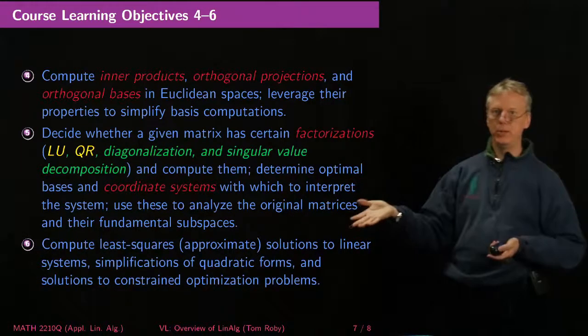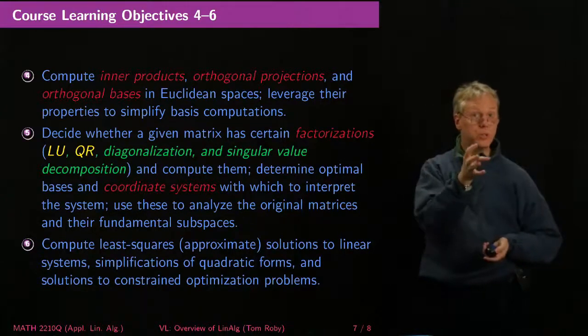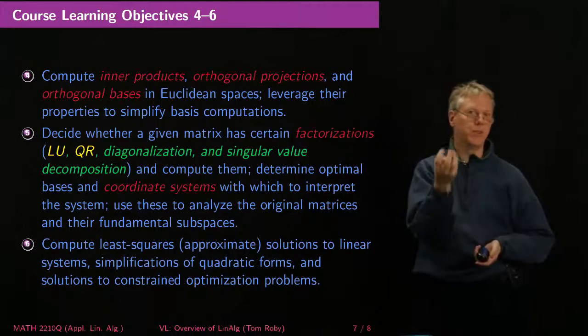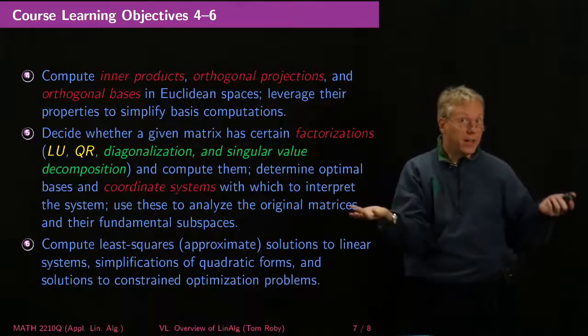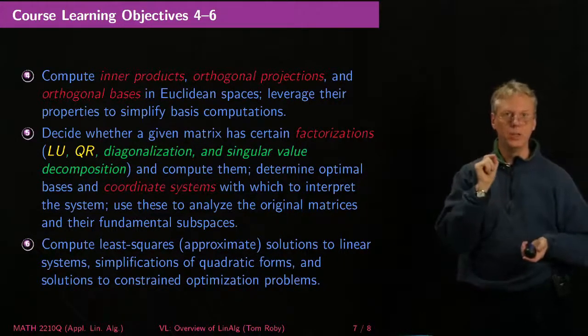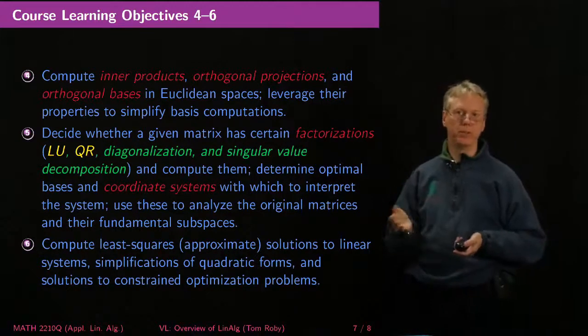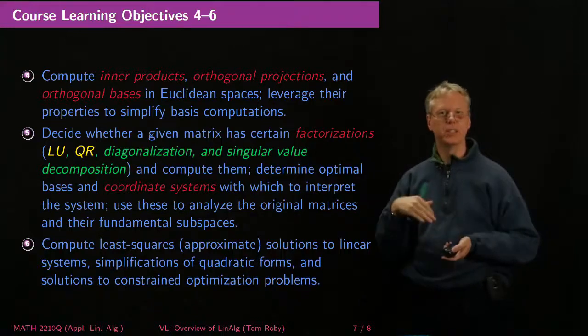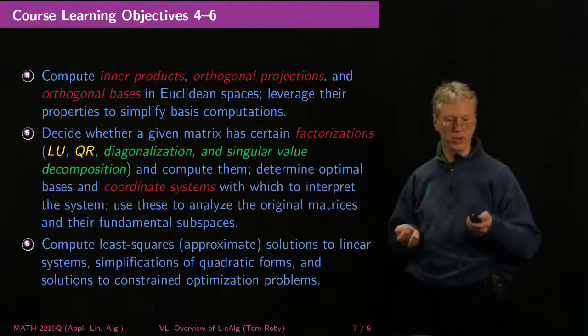As applications, you'll be able to compute least squares approximate solutions to linear systems. When there's no actual solution to a set of linear equations, sometimes you can find the best possible fit, because you still need to know how to act even if you can't find, even if no real solution satisfies all those equations. You'll talk about simplification of quadratic forms, which allows us to do constrained optimization problems with them, kind of thing that comes up all the time in applications.